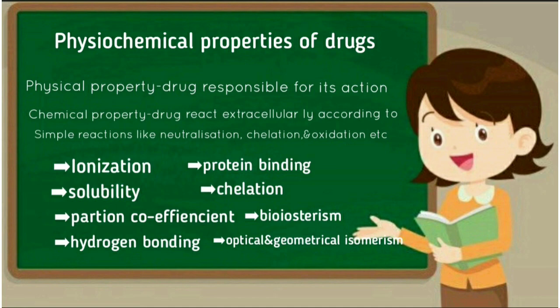Now, the physiochemical properties of drugs. The term physiochemical can be divided into two parts: physical property, meaning the drug is responsible for its action, and chemical property, meaning the drug reacts extracellularly through simple reactions like neutralization, gelatination, and oxidation. The physiochemical properties of drugs include ionization, solubility, partition coefficient, hydrogen bonding, protein binding, chelation, bioisosterism, and optical and geometrical isomerism.